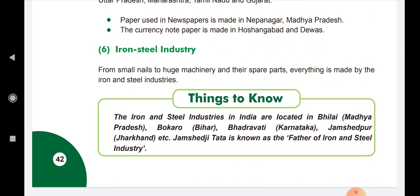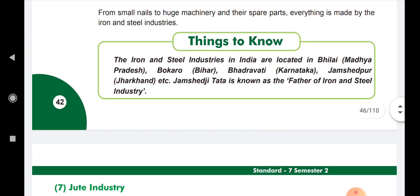Then iron and steel industries. From small nails to huge machinery and their spare parts, everything is made in iron and steel industries. The iron and steel industries in India are located in Bhilai (Madhya Pradesh), Bokaro (Bihar), Bhadravati (Karnataka), Jamshedpur (Jharkhand), etc. Jamshedji Tata is known as the father of the iron and steel industry.